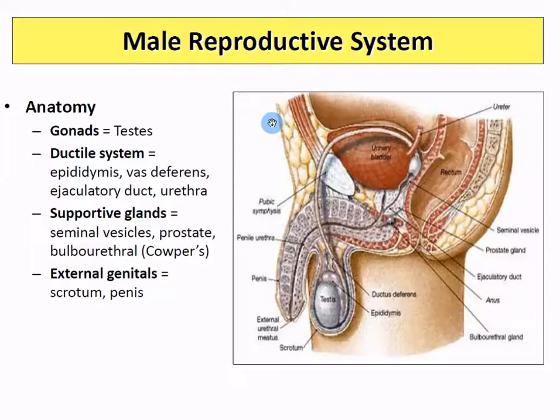These both start as the same primitive gonad, whether you're male or female, and then about two weeks into pregnancy it starts developing either as male or female. By default we are naturally going to be female. When you look at the ductal system, even in the male, you can find the equivalent. The vas deferens is the equivalent of the fallopian tube in a woman.